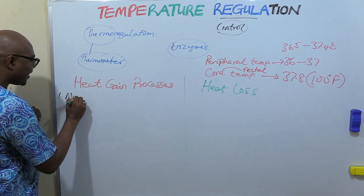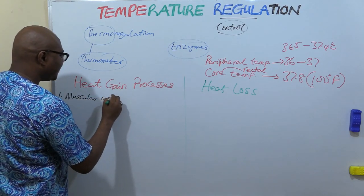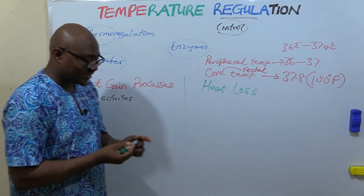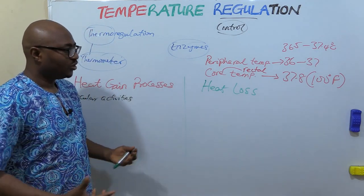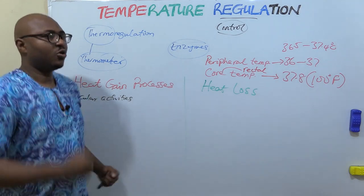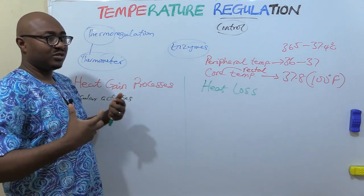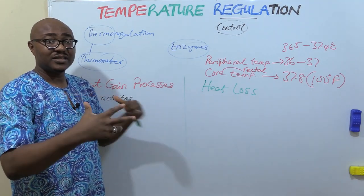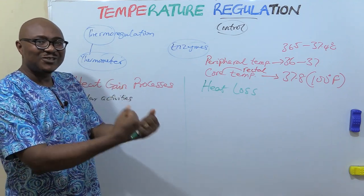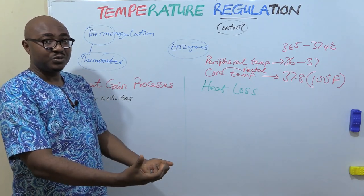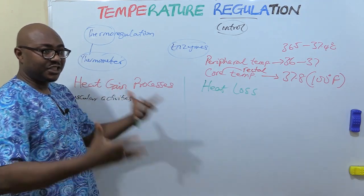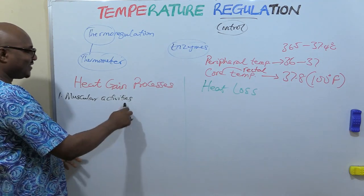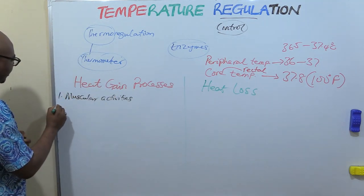One factor for heat gain is muscular activities — very, very important. If you exercise, go to the gym, or go jogging, you notice your body temperature rises very fast. As the muscles are contracting and relaxing and doing a lot of work, energy is being used, and one of the byproducts of energy utilization is heat. So muscular activities lead to heat gain.